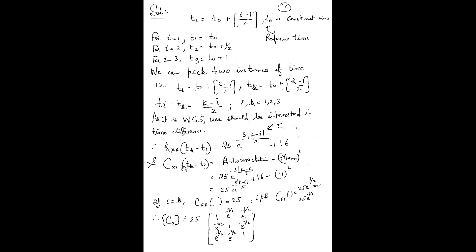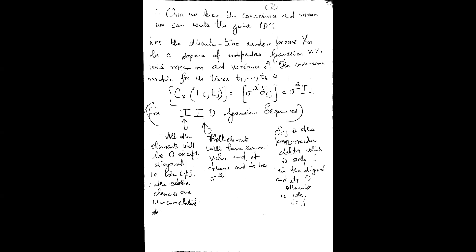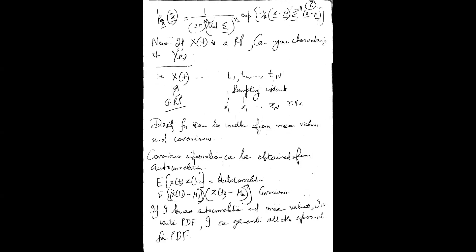One important insight: if you know the autocorrelation function and the mean of a Gaussian random process, you can find the covariance matrix and thereby fully characterize the random process. Once you know the covariance matrix and the mean, you can write the joint probability density function easily.